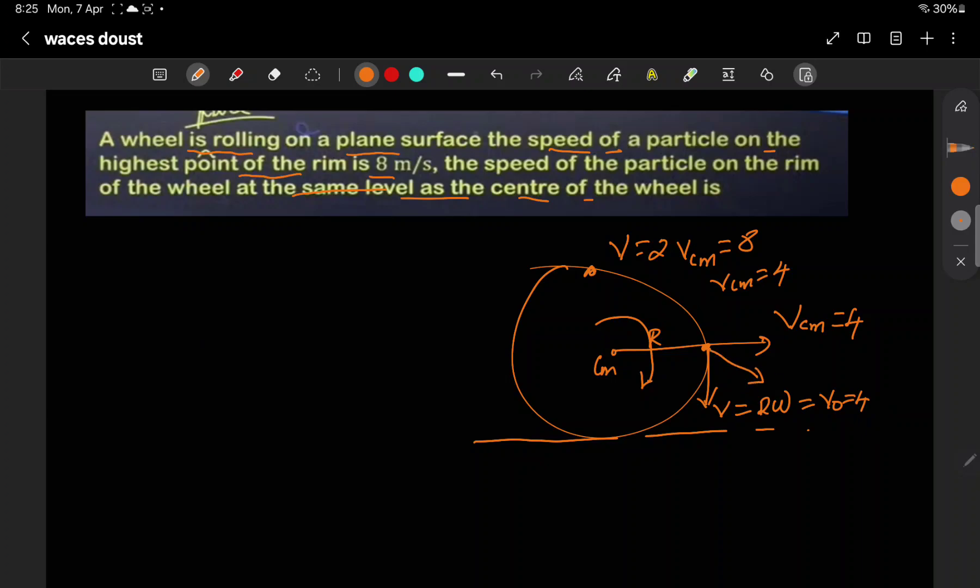What will be the net velocity resultant? The angle is 90 degrees. So root 2 times the velocity. This is root 2 into 4. So your answer would be 4 root 2.